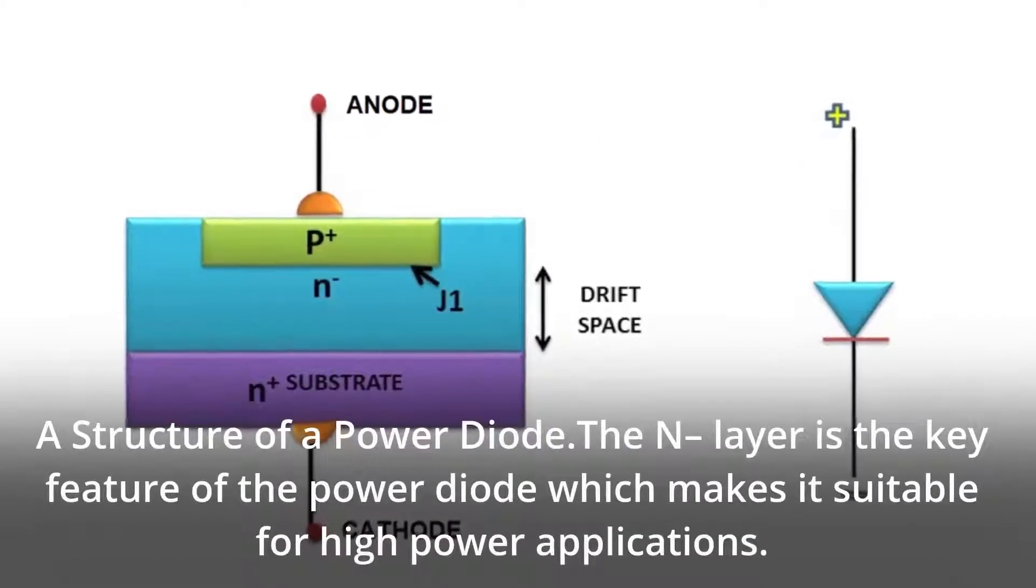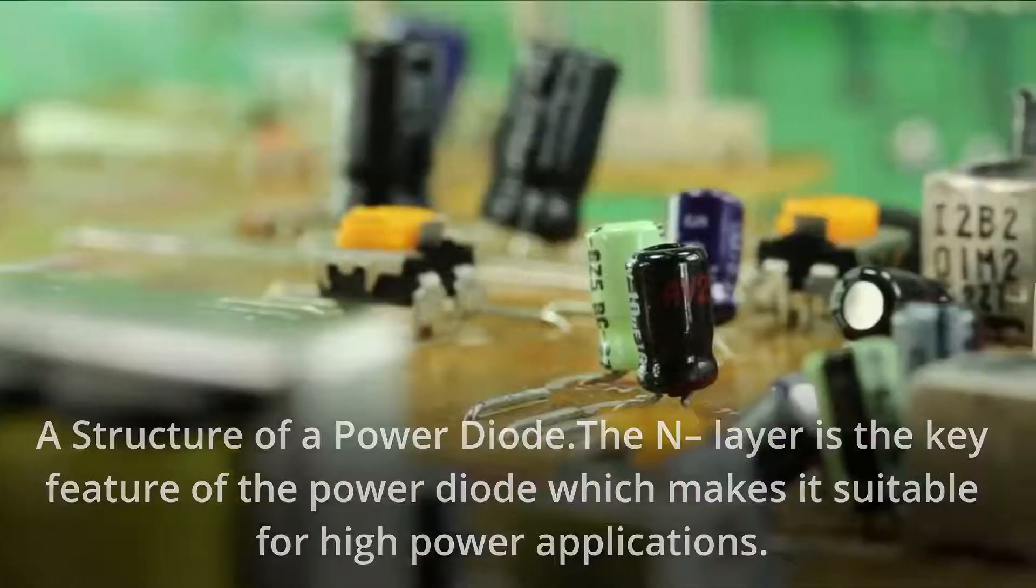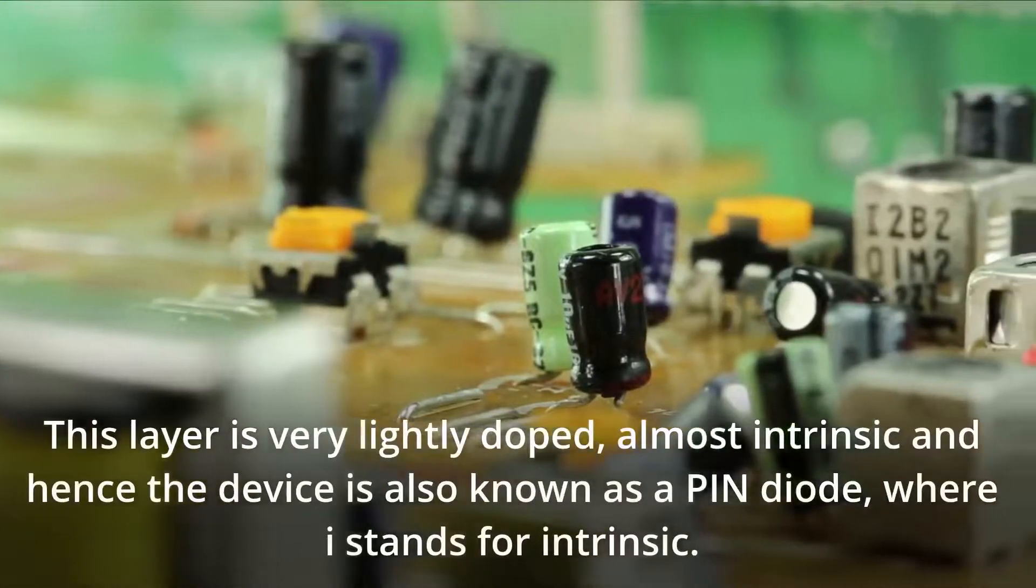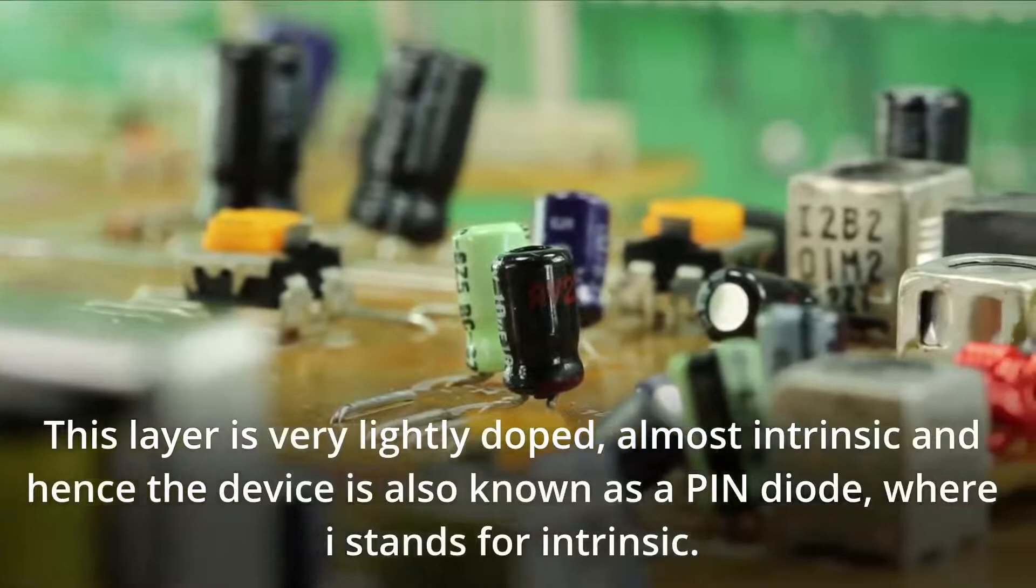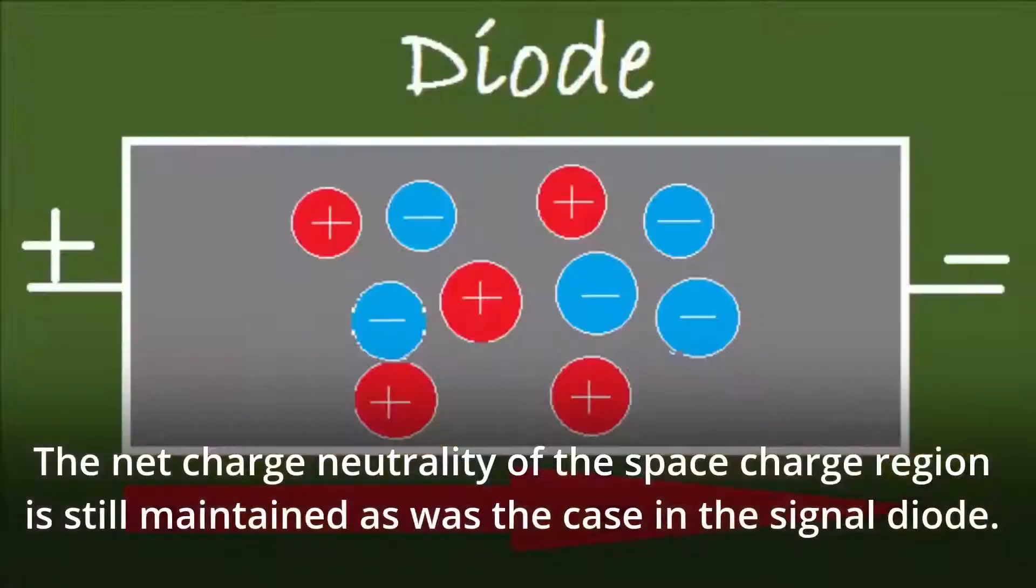The structure of a power diode shows that the N- layer is the key feature which makes it suitable for high power applications. This layer is very lightly doped, almost intrinsic, and hence the device is also known as a PIN diode, where I stands for intrinsic. The net charge neutrality of the space charge region is still maintained as was the case in the signal diode.